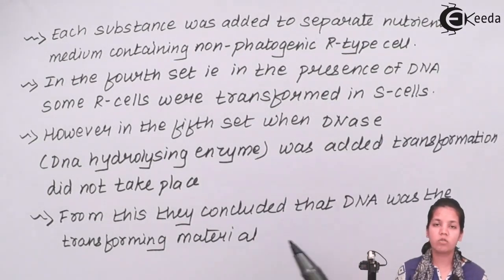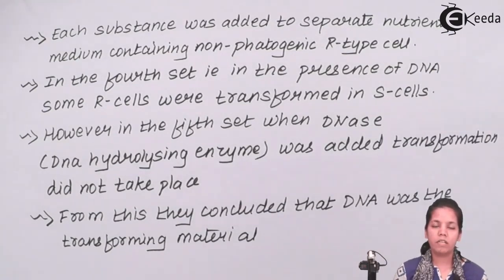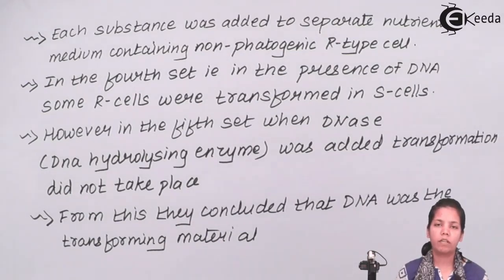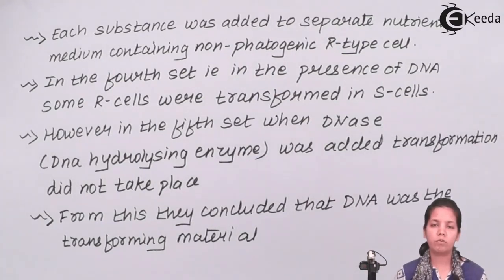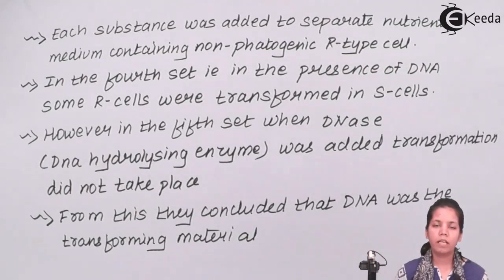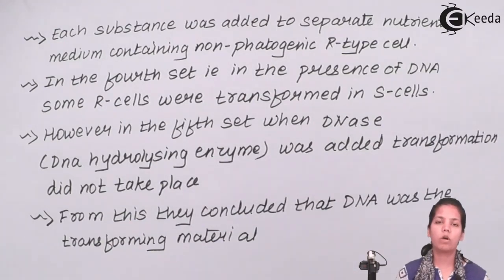It was the DNA that is transferred from one species of capsulated bacteria to another. It was the genetic material that was transported from the smooth strain — which was capsulated, virulent, and disease-causing — to the rough strain, which was non-virulent and non-capsulated. This experiment also showed that the process of transformation takes place and that DNA was the genetic material.